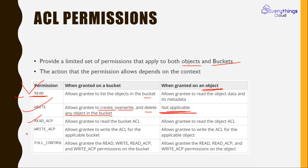Read ACP, write ACP, and full access are other types of permissions available in ACL. Full access means the owner has full access. If the owner wants to give full access to someone else they can, but it is very dangerous — because the person who gets full access can delete, write, and grant permissions to other people, which is very vulnerable. Before providing permission, evaluate why, to whom, and what access is needed based on the scenario.